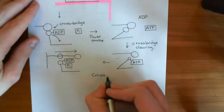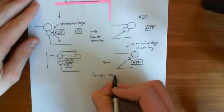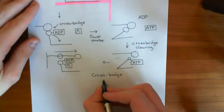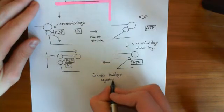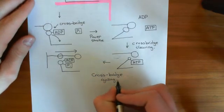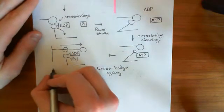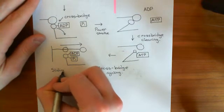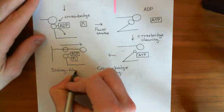This cycle is known as cross-bridge cycling. It's also called the sliding filament mechanism of muscle contraction.